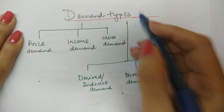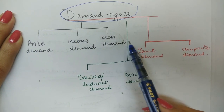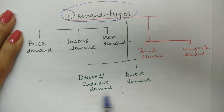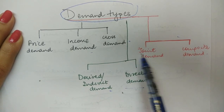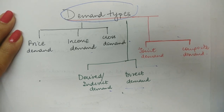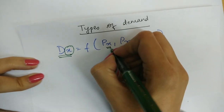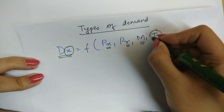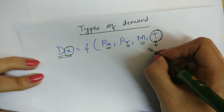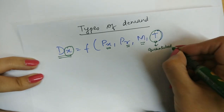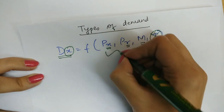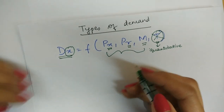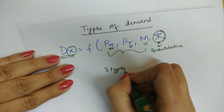In this lecture we study the types of demand and classify demand into three types: price demand, income demand, cross demand, derived or indirect demand, direct demand, joint demand, and composite demand. The demand for commodity X is dependent on the price of commodity X, price of related goods, income of the consumer, and the taste and preferences of the consumer. Since taste and preferences cannot be measured quantitatively, if we exclude this and talk of the other determinants — price of commodity X, prices of related goods, and income of the consumer — we get three types of demand.